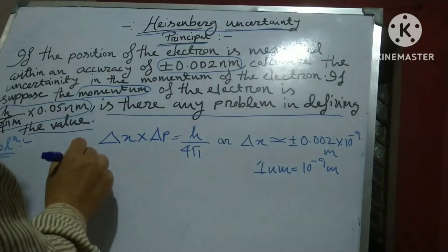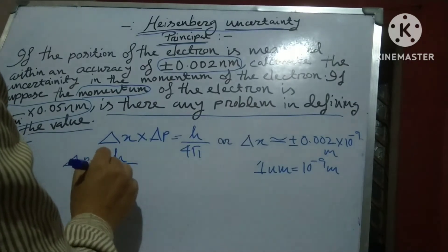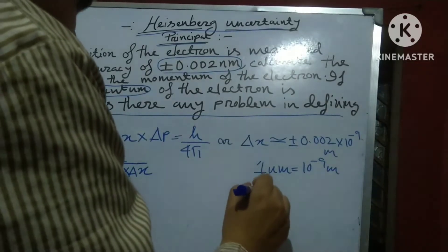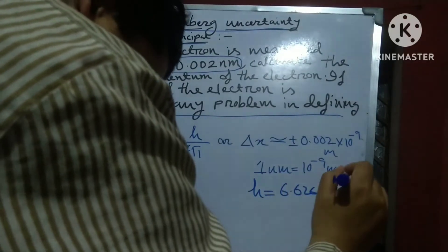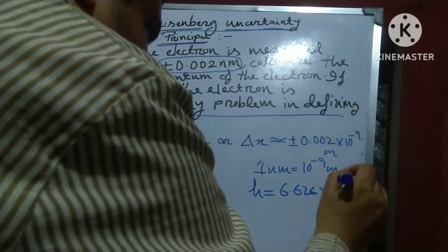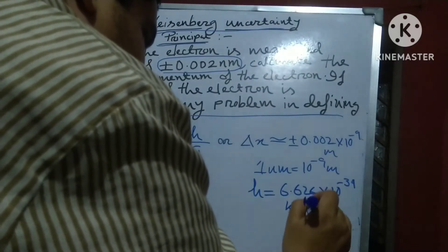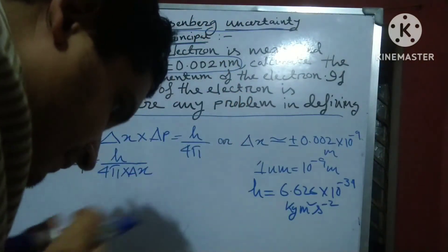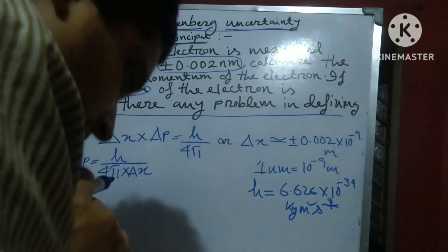So Δp equals to h divided by 4π. Δp equals to the power minus 34 kg meter square per second square. Is it clear? kg meter square per second square. Sorry, per second, not per second square, kg meter square per second.